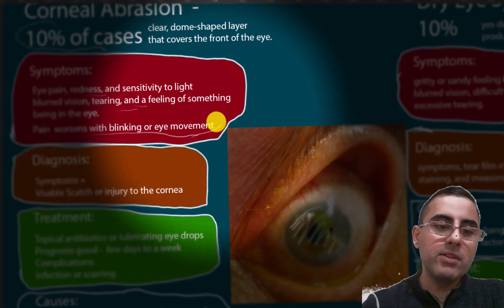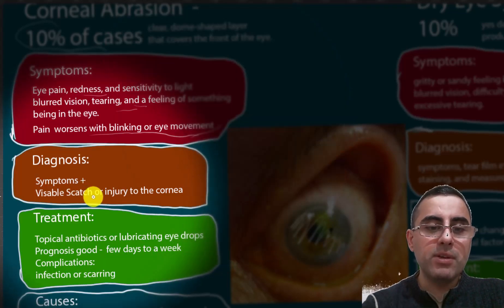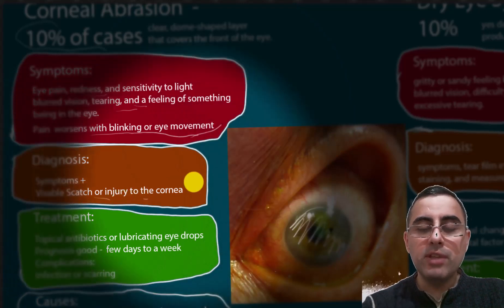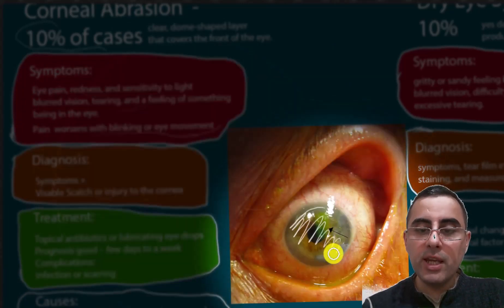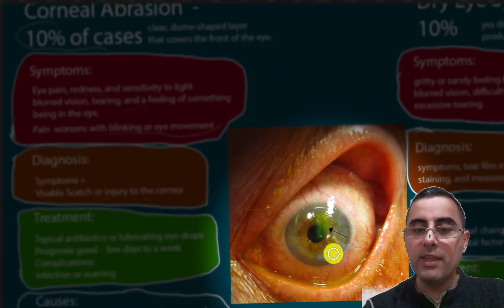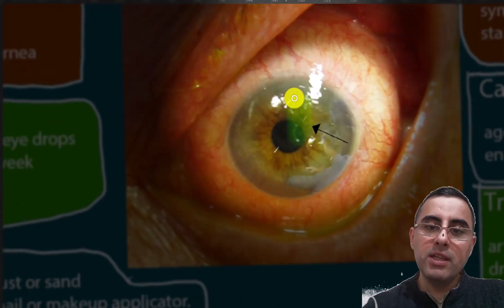Diagnosis is based on symptoms plus a visible scratch or injury to the cornea. If you stain the cornea, you can notice visible damage. In this picture, the green part is the damaged area.